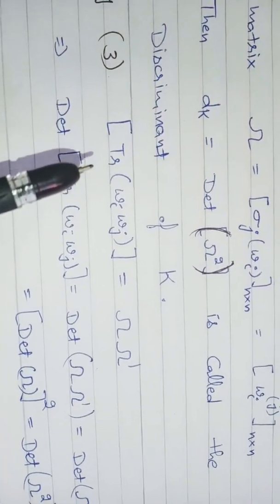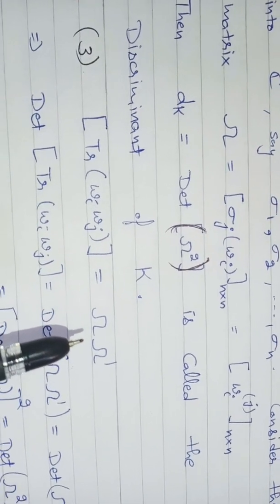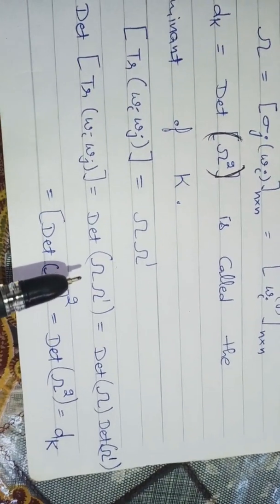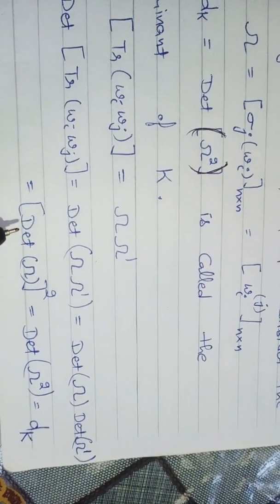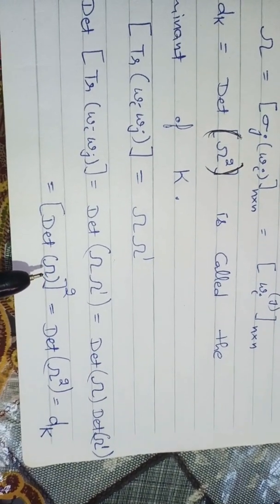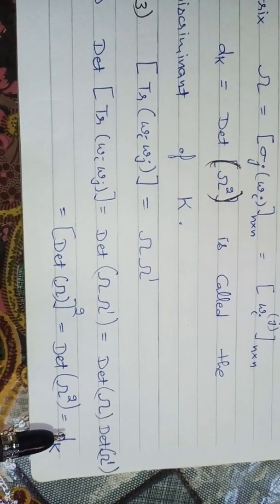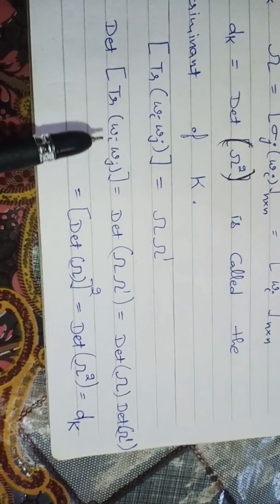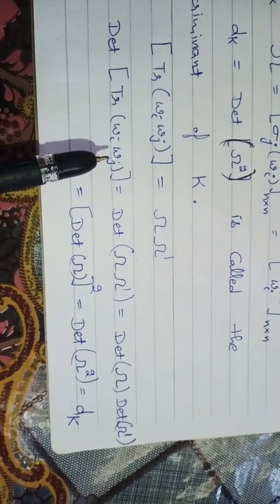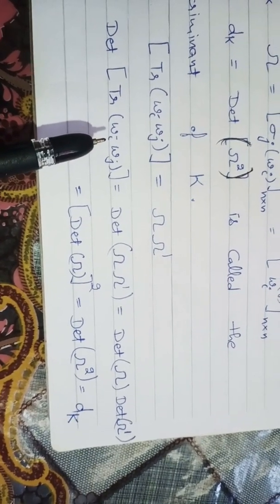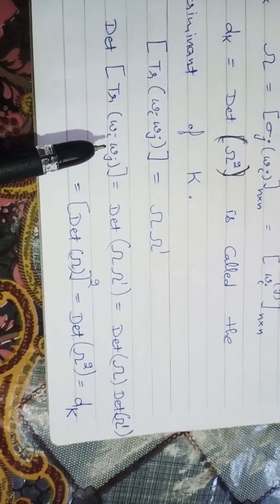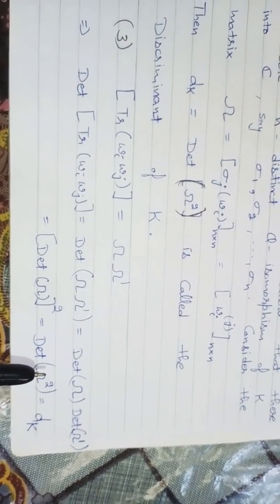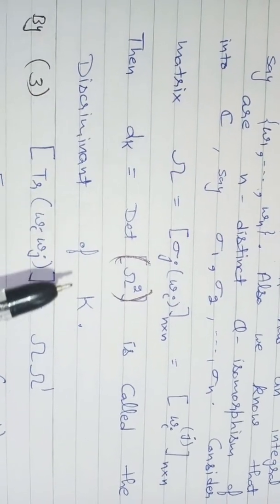In our last video lecture, by Proposition 3, we saw that the matrix of trace(w_i · w_j) equals Omega · Omega^T. Taking its determinant, this is det(Omega) · det(Omega^T), which equals det(Omega)² since a transpose has the same determinant, and this equals d_K. So d_K is nothing but det(trace(w_i · w_j)). We already saw that det(trace(w_i · w_j)) is independent of the choice of basis. If we choose another integral basis x1 to xn, then det(trace(x_i · x_j)) equals det(trace(w_i · w_j)), so d_K is well defined.